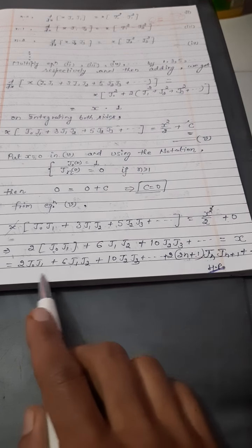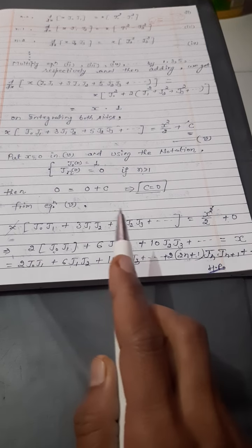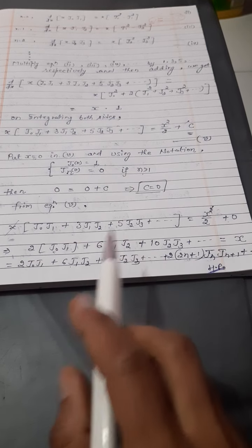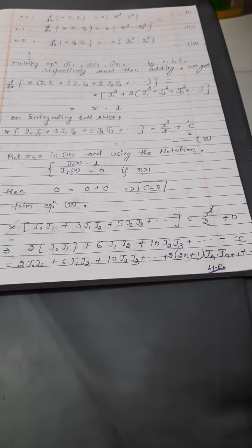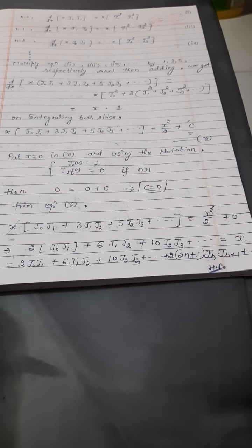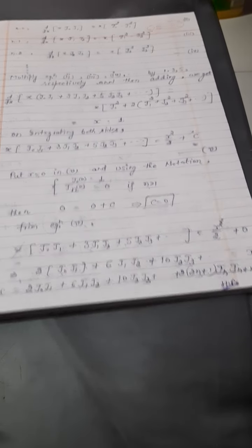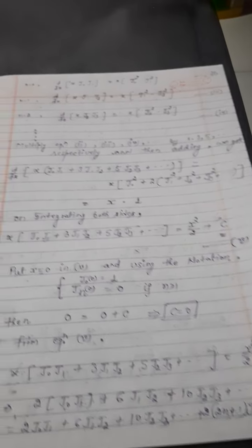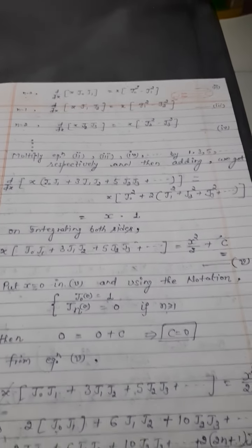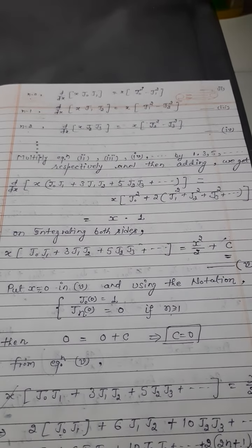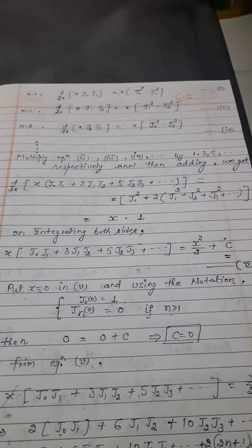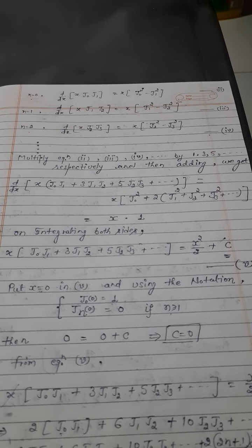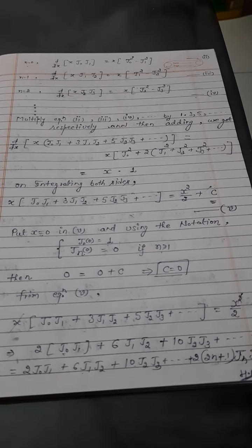तो यह अपने को part B में prove करना था: x = 2J₀J₁ + 6J₁J₂ + ... + 2(2n+1)·Jn·Jn+1 + and so on. इससे पहले जो example था वो और यह example दोनो related हैं। यह अपना complete हो गया।